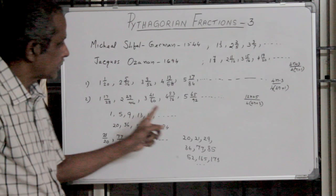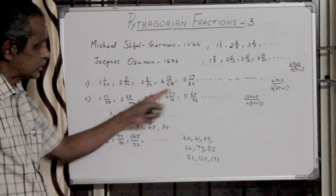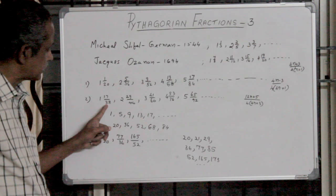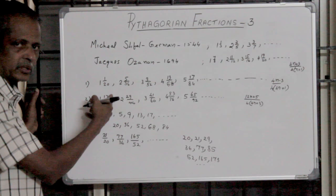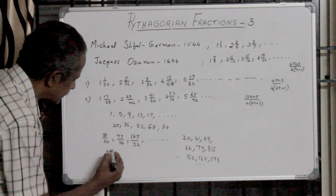Convert this into an improper fraction. Just like 28 into 1 is 28, 28 plus 17 is 45 by 28.